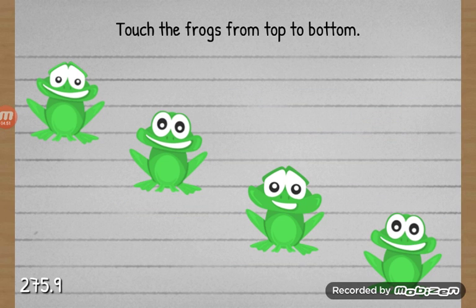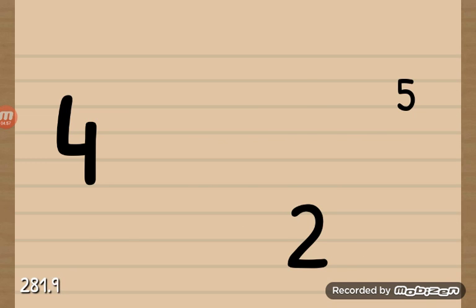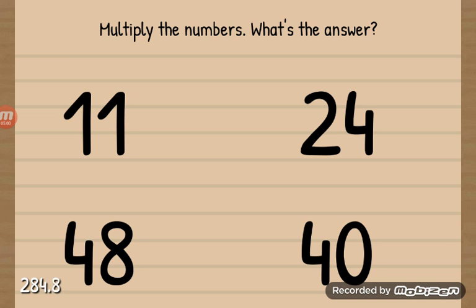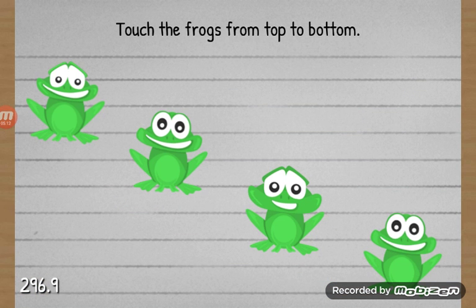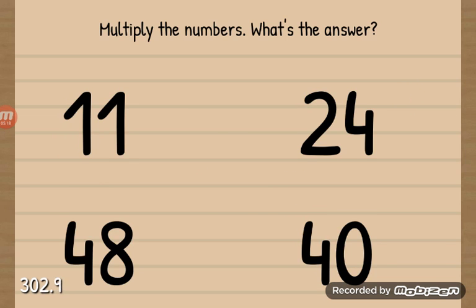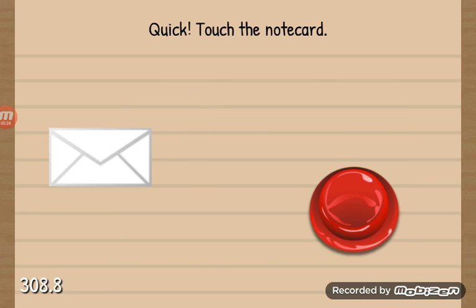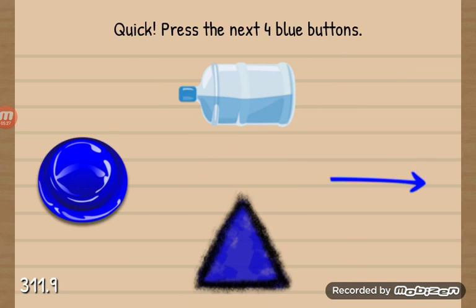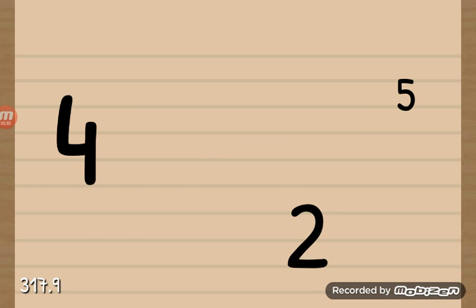Touch the frogs from top to bottom. It's a gray card. It's a gray card, bad gray card. Multiply the numbers. What's the answer? It isn't you. One, two, three, four, five. There, it's 40. One, two, three, four, five.